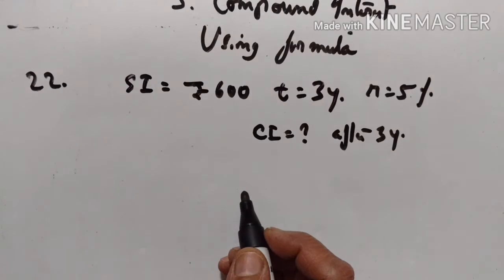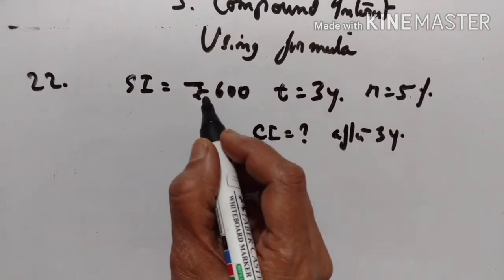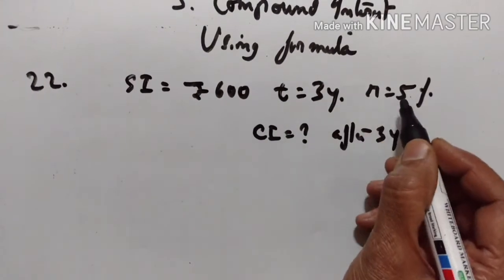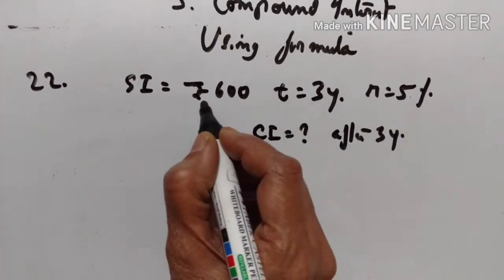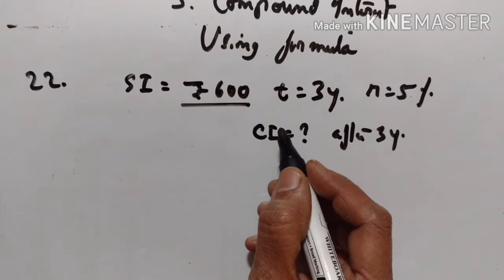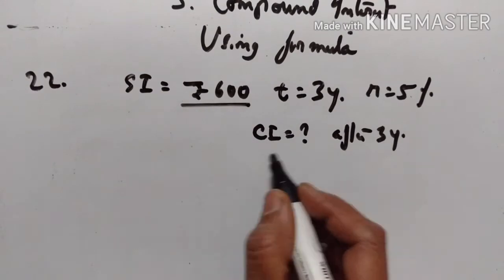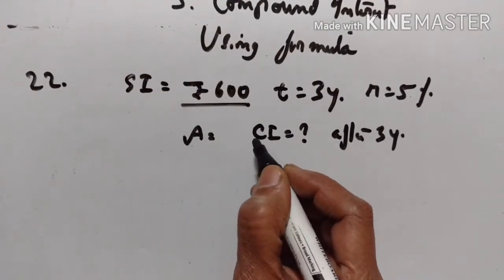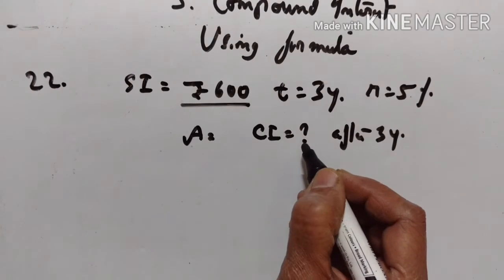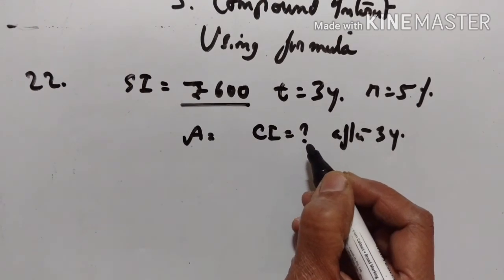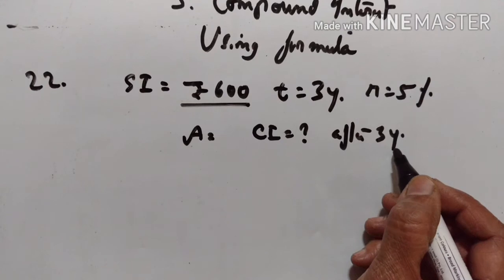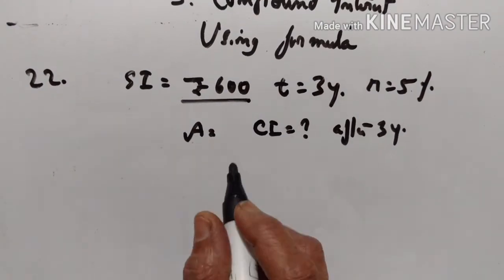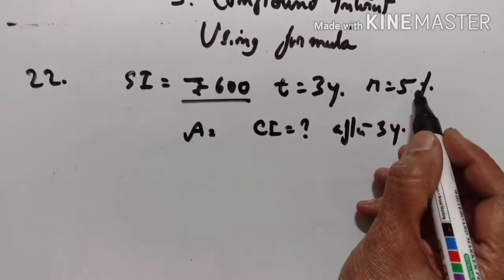22nd problem. Simple interest on a certain sum of money for 3 years at 5% per annum is rupees 600. Find the amount due and compound interest on this sum at the same rate after 3 years, the interest being compounded annually. Let us find the principal from this.